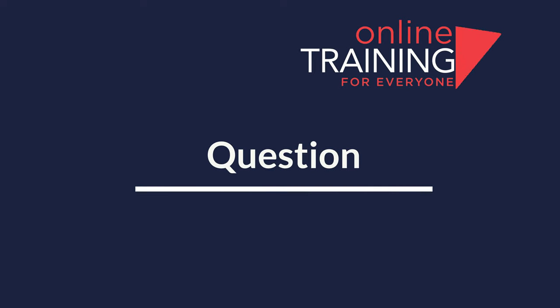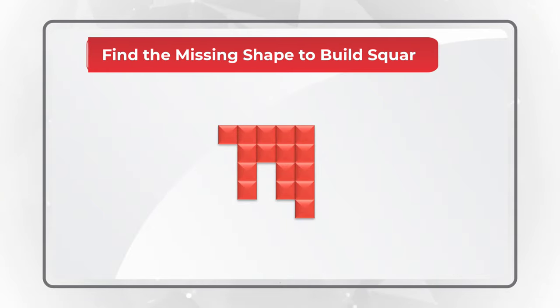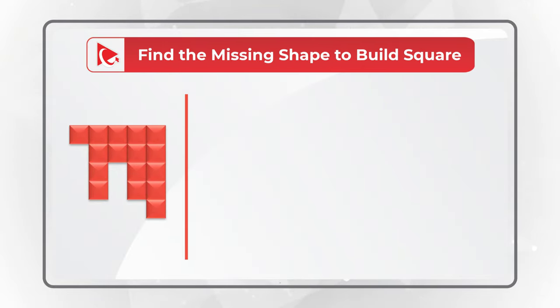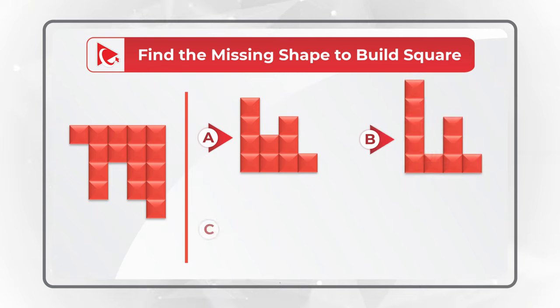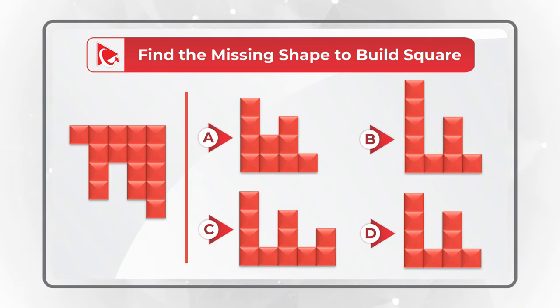Here is a very interesting question to test your spatial reasoning. You are presented with a partial square, and you need to find the missing shape to build the full square. You have 4 different choices to choose from to complete the square: Choices A, B, C, and D. Take a close look to see if you can come up with the answer.